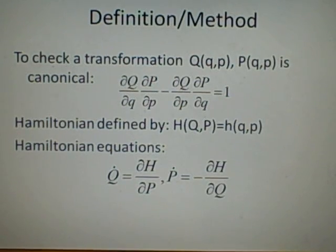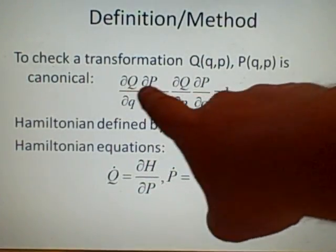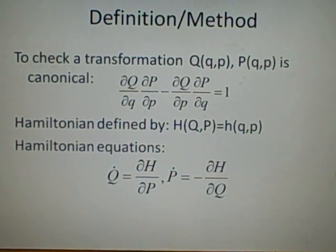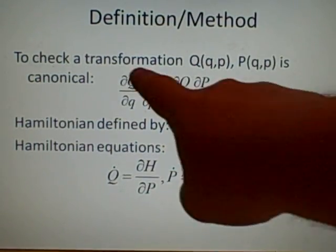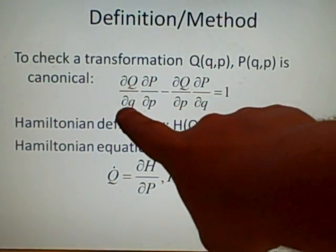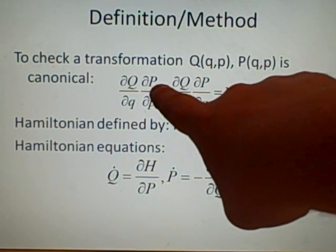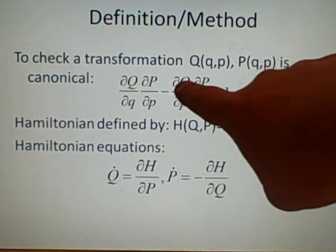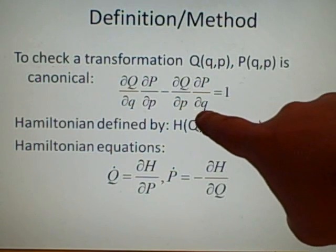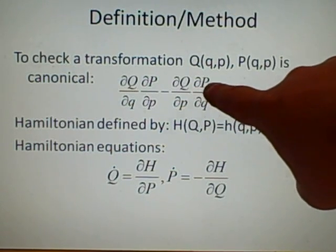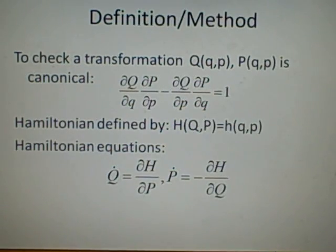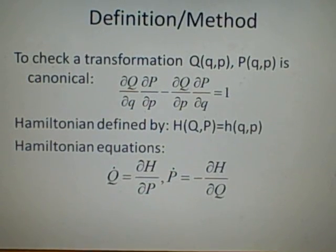Now, to check if a transformation is canonical, use this equation here. These will be your two transformations that you'll be given in the question, where we have dQ/dq times dP/dp minus dQ/dp times dP/dq, and that has to equal one. If it doesn't, then clearly it isn't a canonical transformation.